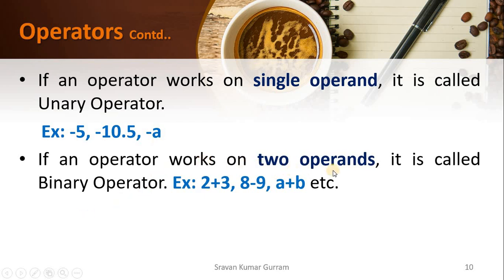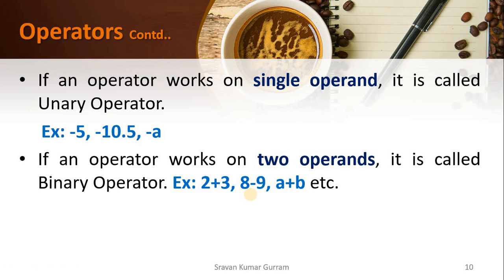If an operator works on two operands, it is called a binary operator. For example, addition — you cannot implement addition with a single variable or value; you need at least two values or two variables. That is why the plus operator is called a binary operator. Similarly, subtraction needs a minimum of two values, so it is also a binary operator. Multiplication, division — all of these are called binary operators.